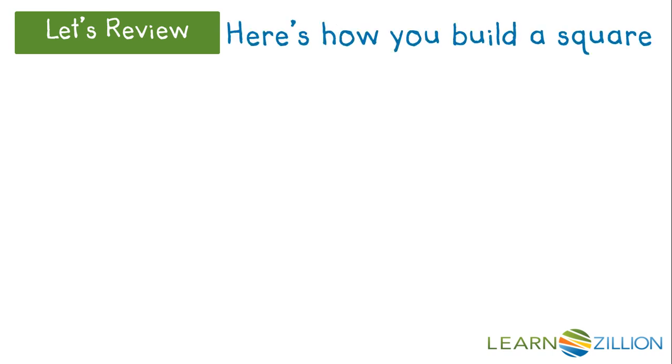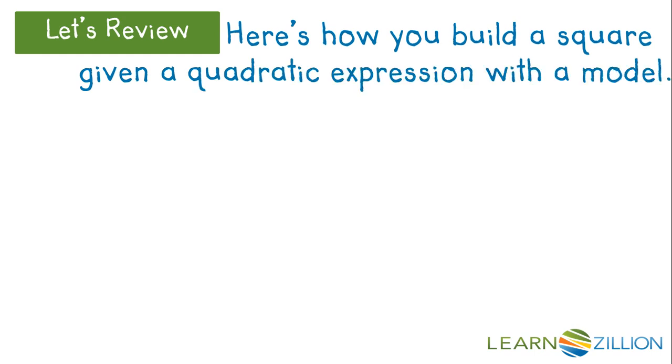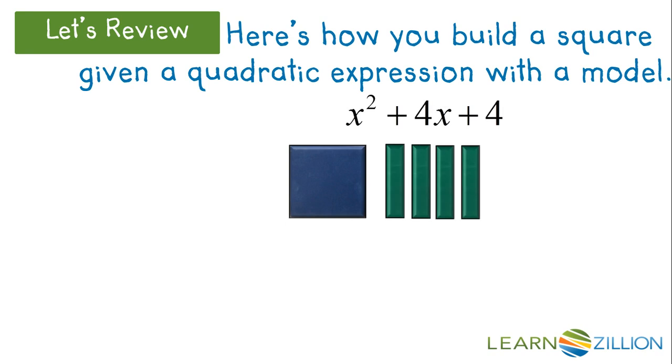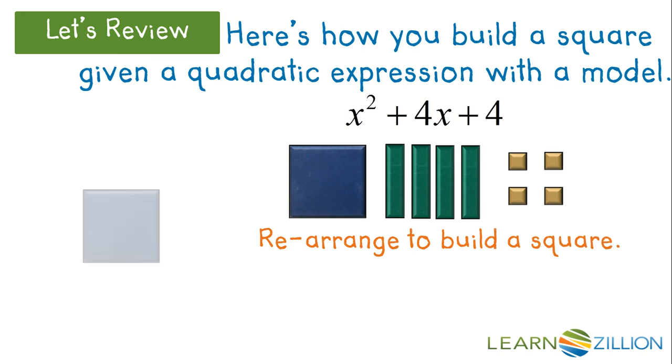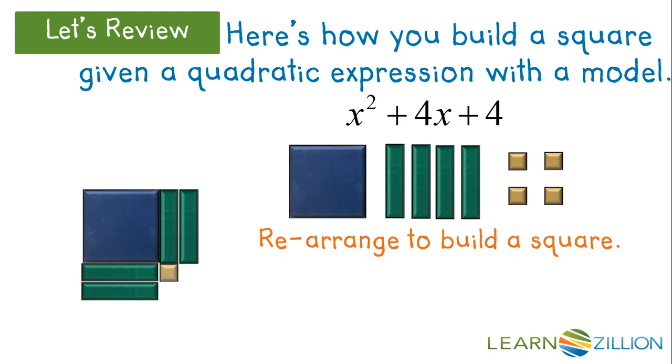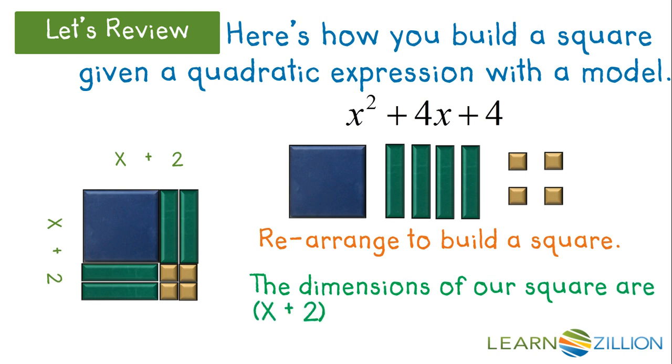Here's how you build a square, given a quadratic expression, with a model. x squared plus 4x plus 4. Let's rearrange to build a square. And our dimensions are x plus 2 by x plus 2, length times width.